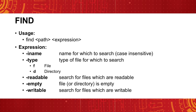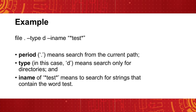The find command is another simple command that takes multiple arguments to search paths for distinct criteria. The path argument accepts any path in the file system. The expression arguments accept many different flags. Among the accepted flags are: -iname, which searches for a file or directory name without regard for case sensitivity; -type, which determines what type of file to search for; -readable, which searches for files readable by the current user; -empty, which searches for files or directories that are empty; and -writable, which searches for files or directories that are writable by the current user. These flags can also be chained to the benefit of the user.